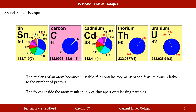Carbon-14 occurs in such a small amount it barely appears on isotope charts. Uranium-235 and uranium-234 are very unstable and want to decay due to an unstable number of neutrons and protons. The nucleus becomes unstable if it contains too many or too few neutrons relative to protons. Neutrons buffer the repulsion between the positive protons. The forces inside the atom result in the nucleus breaking apart and releasing particles to become more stable.